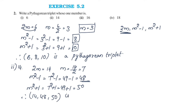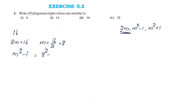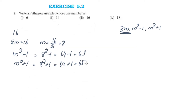For the number 16: 16 = 2m, so m = 8. Then m²−1 = 64−1 = 63, and m²+1 = 64+1 = 65. So the Pythagorean triplet is 16, 63, 65.